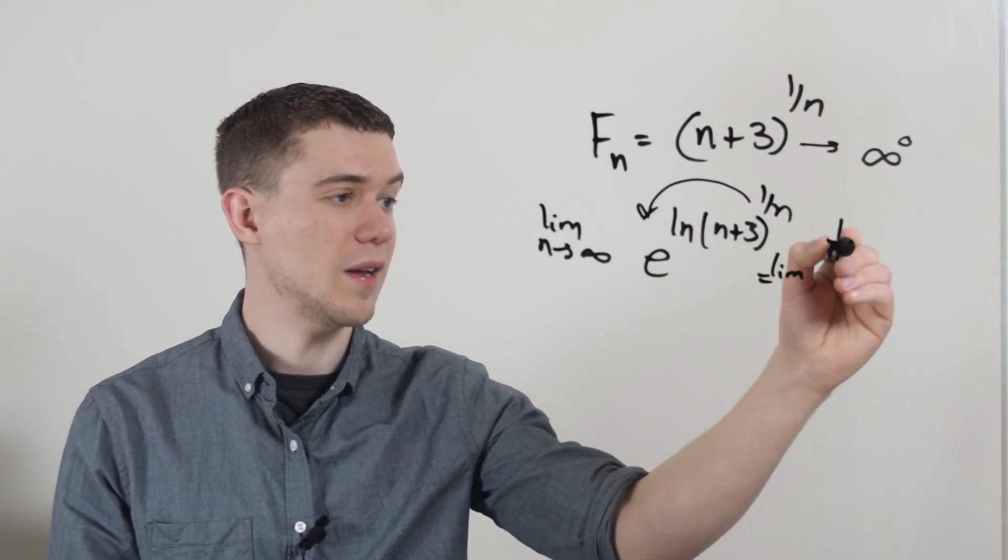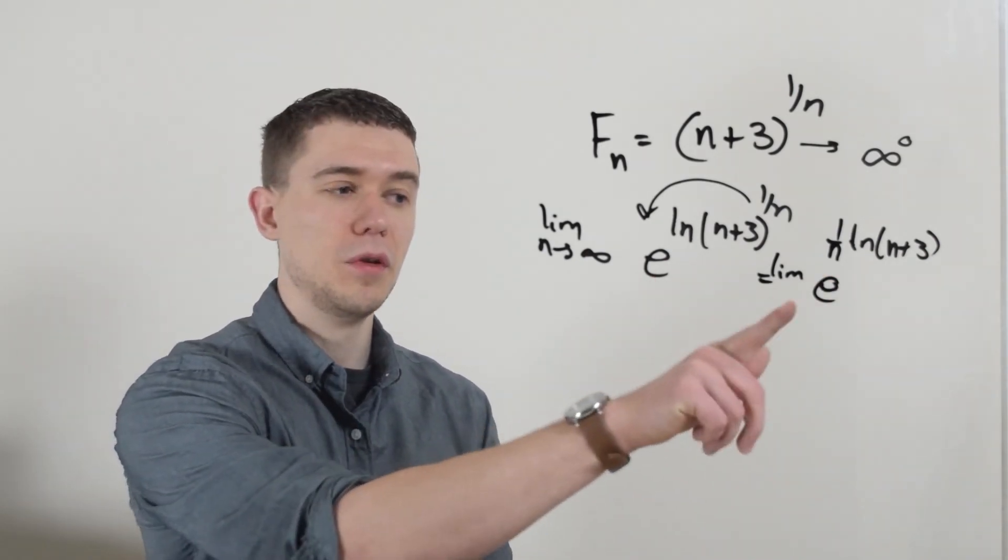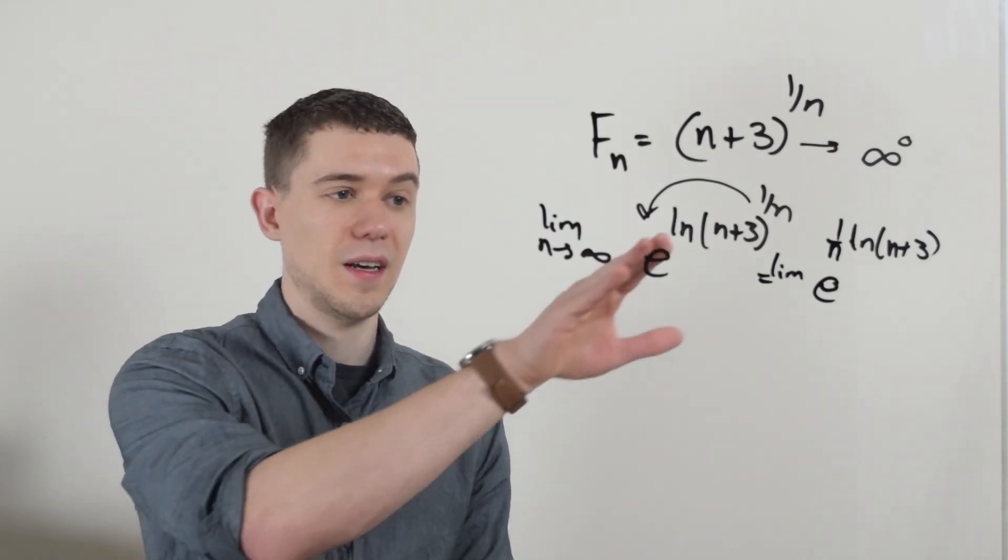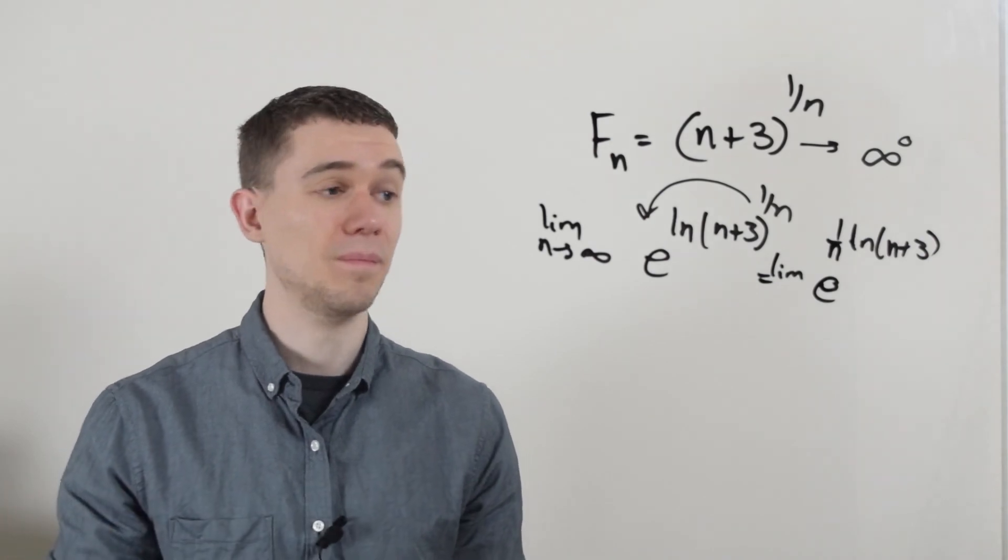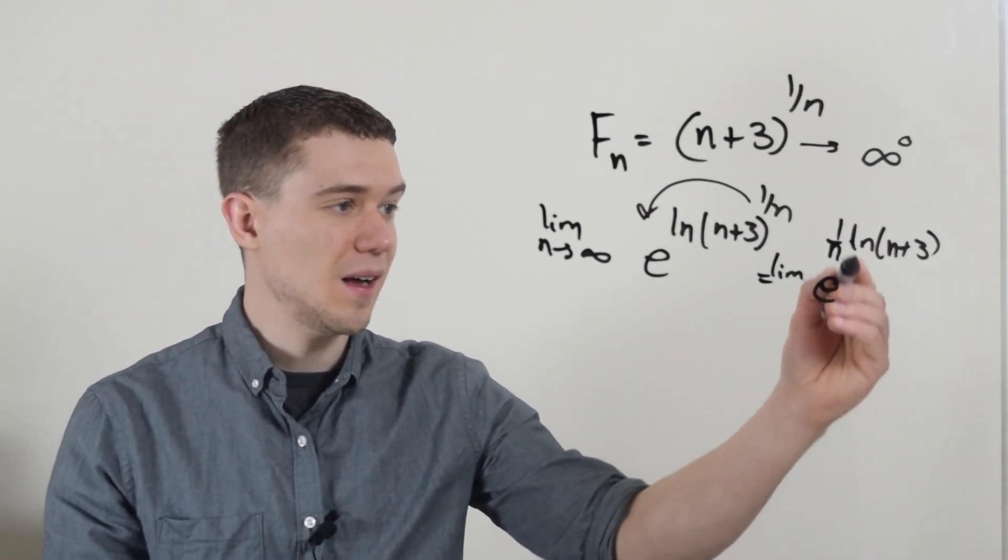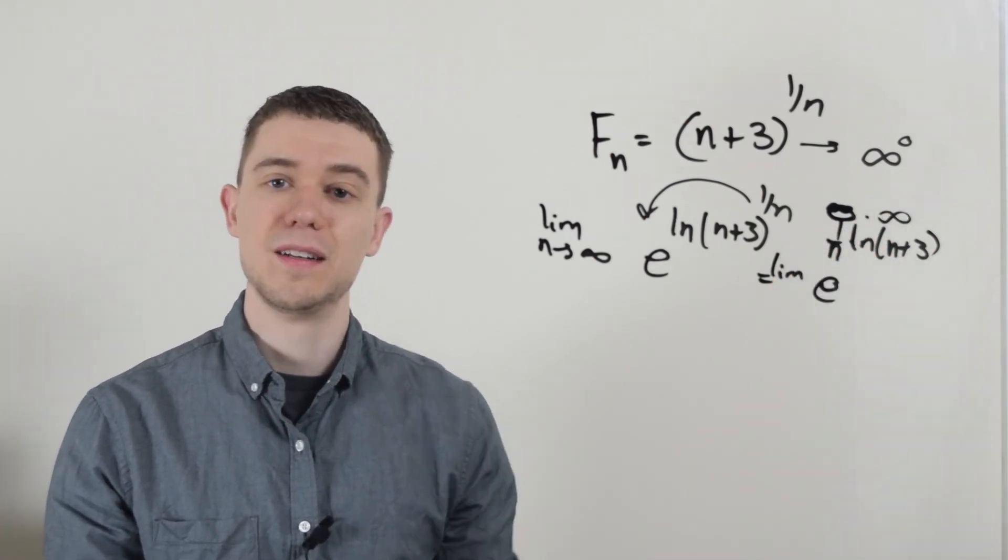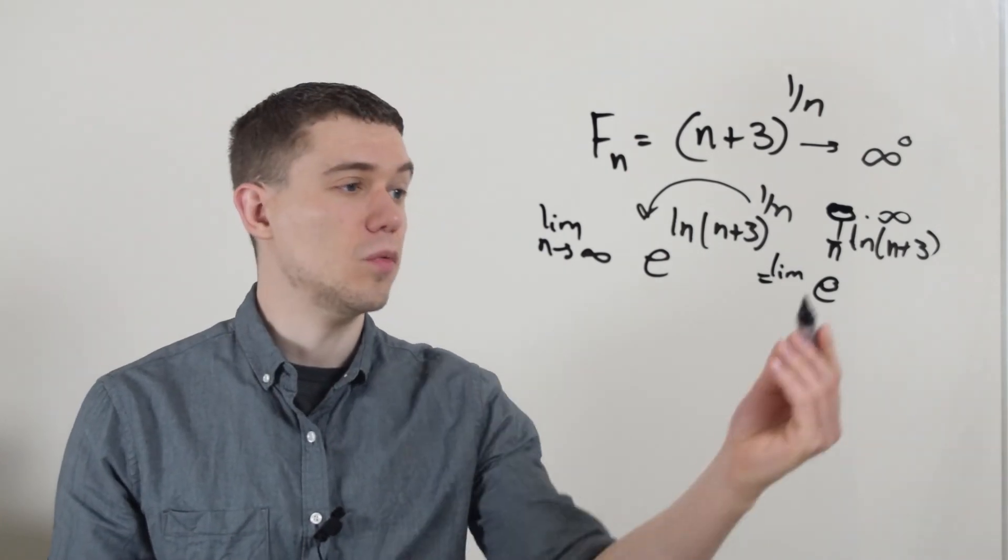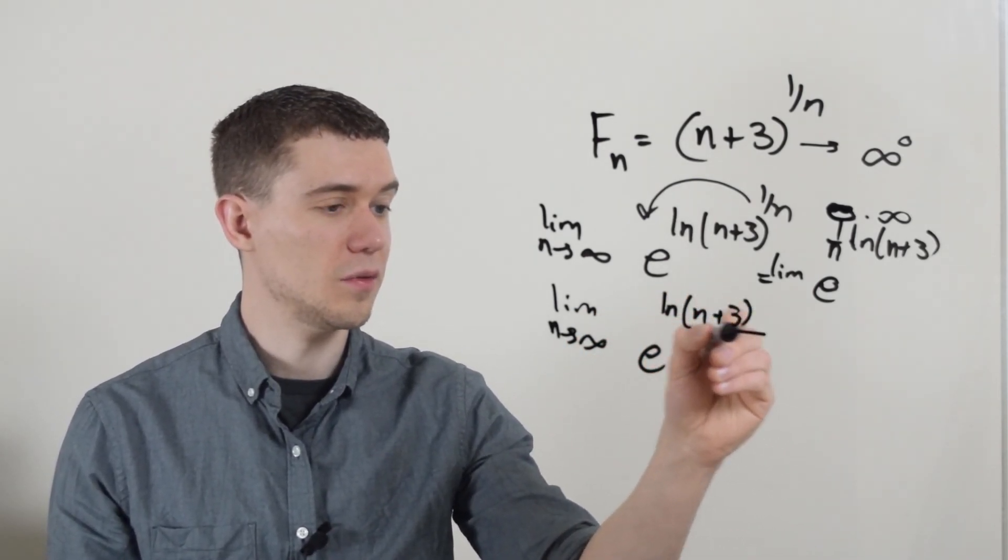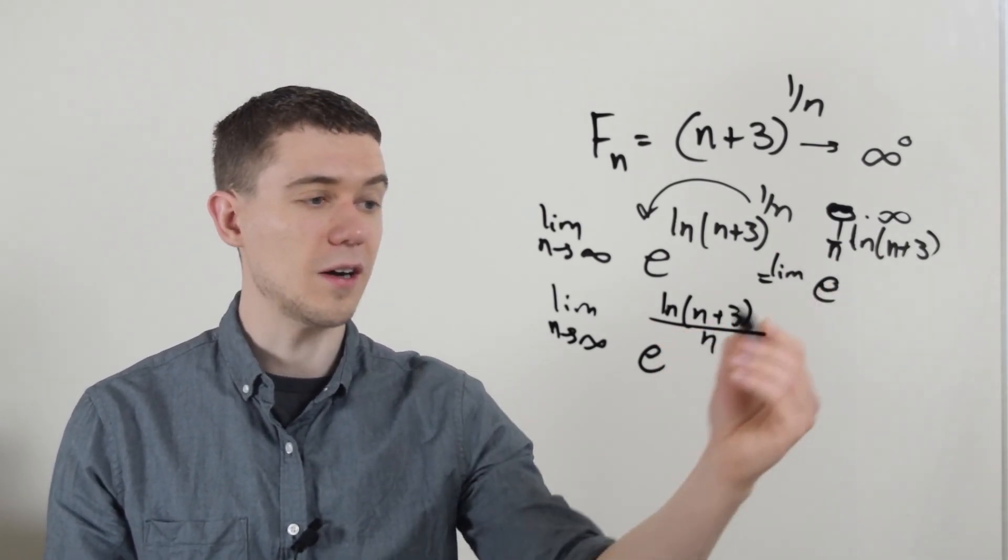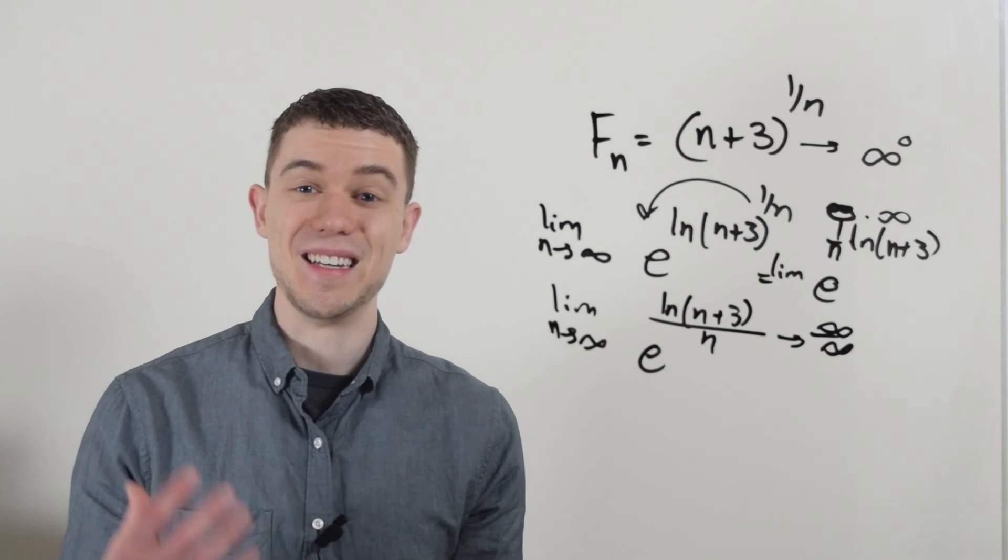I can write this like 1 over n times natural log of n plus 3 all in the exponent of e. The problem with this is now if I take the limit, this piece 1 over infinity would be tending towards 0, but natural log of infinity is infinity, so I get a different indeterminate form. To use L'Hôpital's rule we need a fraction, so we write this as a fraction. Instead of multiplying by 1 over n, I'll just divide by n. Those are algebraically equivalent. Now L'Hôpital's rule is going to work because this exponent is now approaching infinity over infinity.